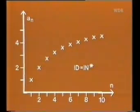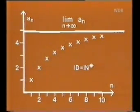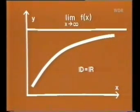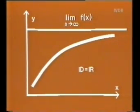Bei Folgen-Grenzwerten wissen wir genau, was dieses n gegen Unendlich bedeutet. Die natürlichen Zahlen gehen ins Unendliche. Wollten wir dagegen Grenzwerte von Funktionen allgemein definieren, nur mit x gegen Unendlich, müssten wir uns zuerst überlegen, was wir eigentlich damit meinen — die Folge aller geraden Zahlen, Zehntelschritte, Tausendstelschritte? Der Unterschied zu Folgen besteht darin, dass wir jetzt die x-Achse als Ganzes haben. Wir werden bei den Überlegungen zur Grenzwertdefinition für Funktionen die Ergebnisse von Folgen benutzen.